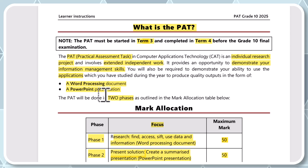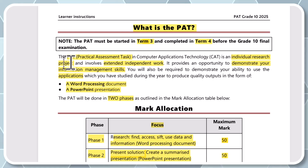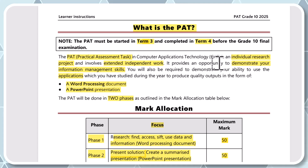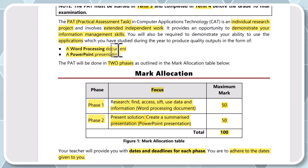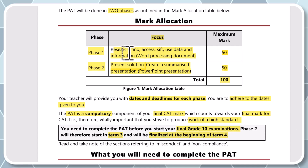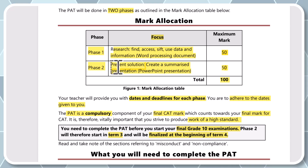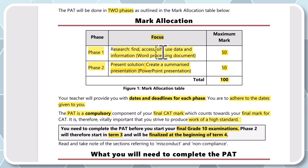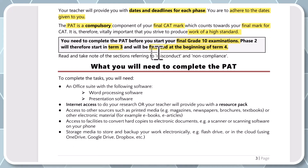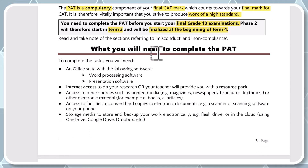So to summarize: the PAT is an individual research task and project requiring independent work. You're going to put all your skills learned in Term 1 and Term 2 in CAT into this work and produce two documents. Phase 1 is a word processing document — 50 marks — where you research, find, access, sift through, and process data and information. Phase 2 is a PowerPoint presentation of the summarized information from Phase 1, also 50 marks.